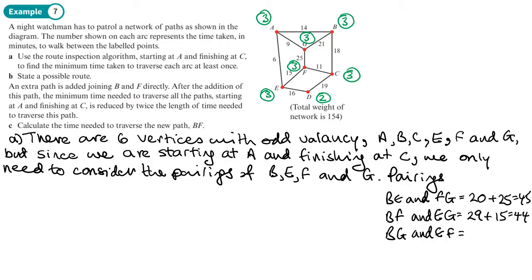Then we'll look at the last pairing: B,G and E,F. Going from B to G, that's going to be 21 - that's the shortest route. So 21 plus 15 is going to be 36. That means this is the pairing with the lowest weight.